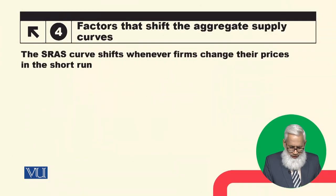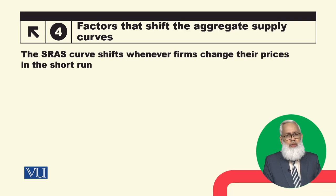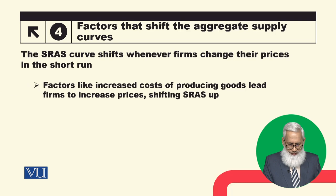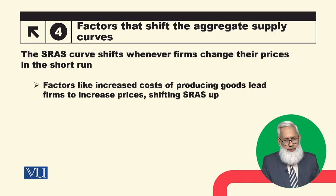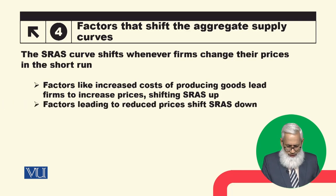Short-run aggregate supply curve کب shift کرے گا؟ Whenever firms change their prices in the short-run تو وہ SRAS curve کو shift کر دے گا۔ Increased cost of producing goods lead firms to increase prices, shifting the SRAS curve up۔ یعنی اگر cost بڑھ جاتی ہے تو curve upward shift ہو جائے گا، and vice versa اگر cost میں کمی ہو تو curve downward shift ہو جائے گا۔